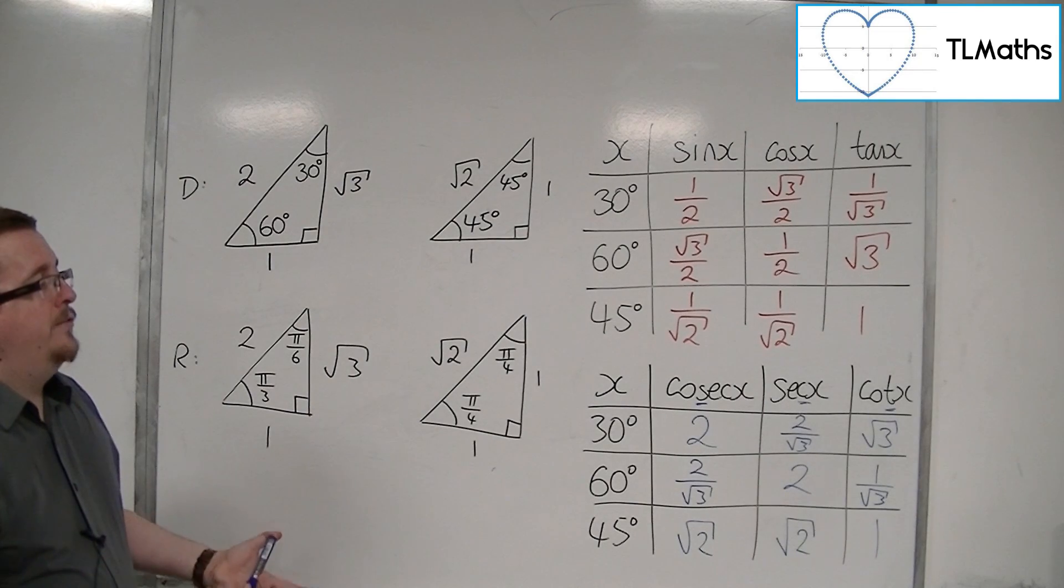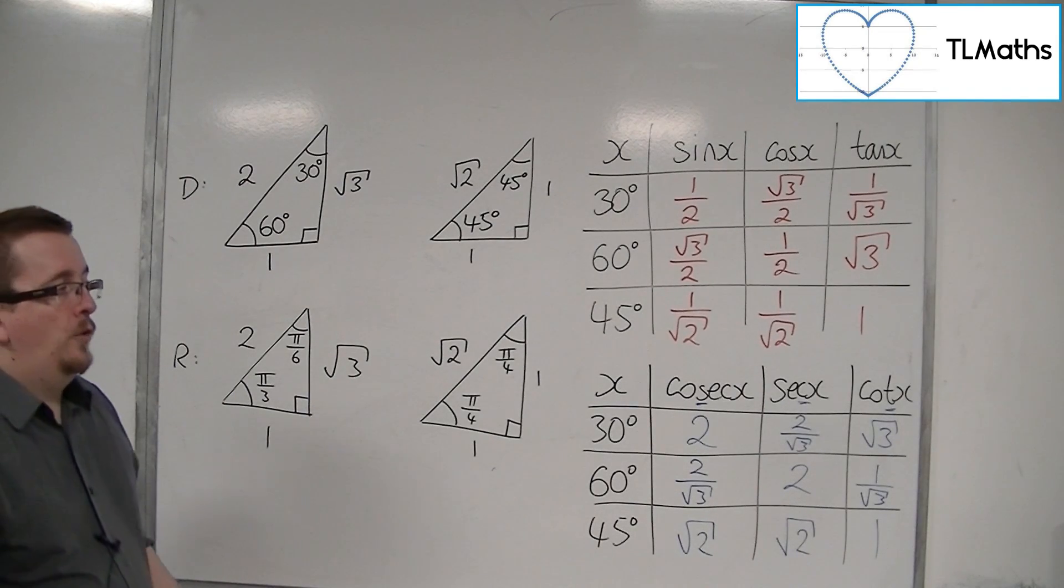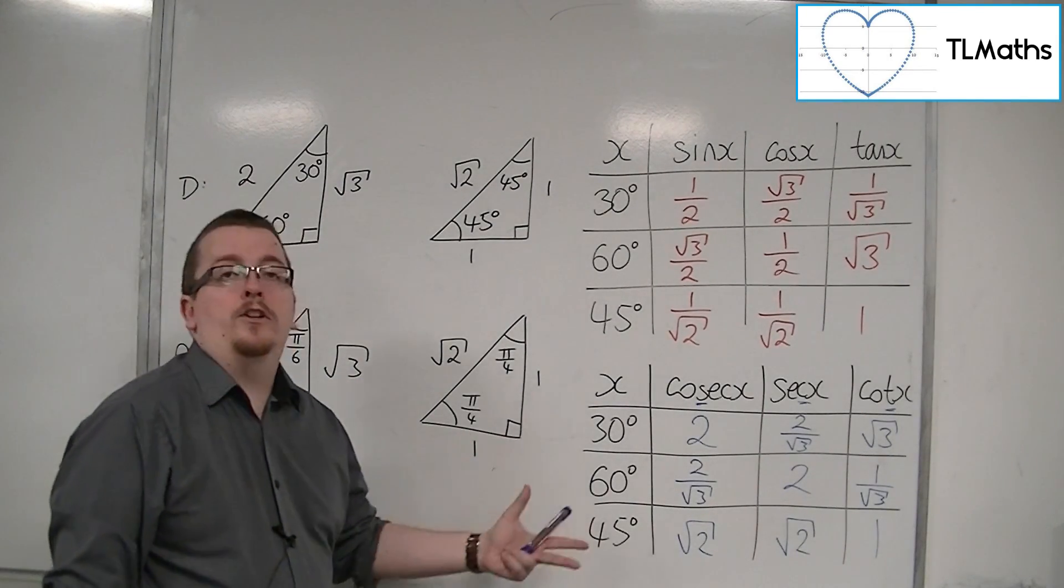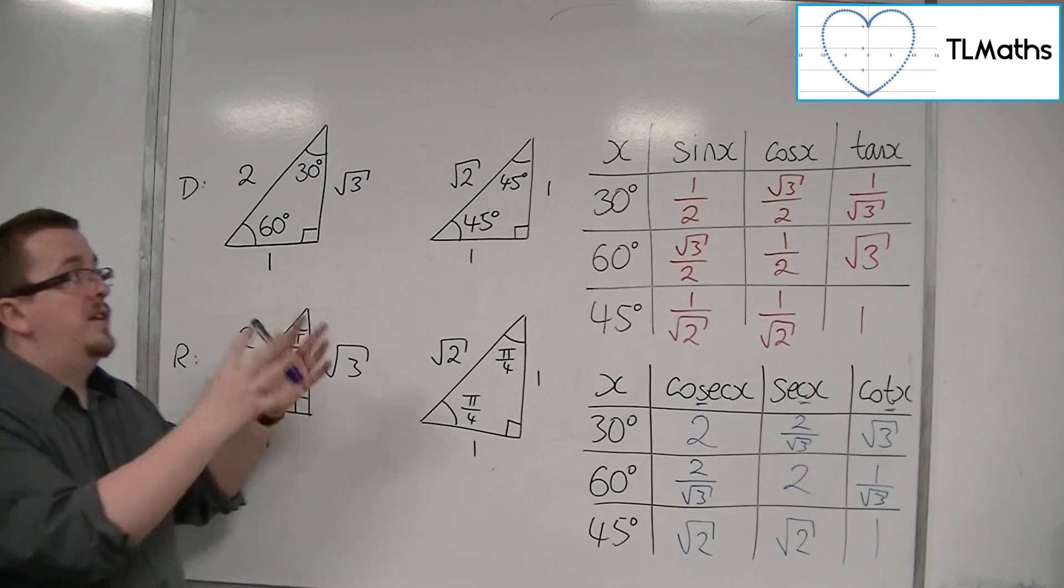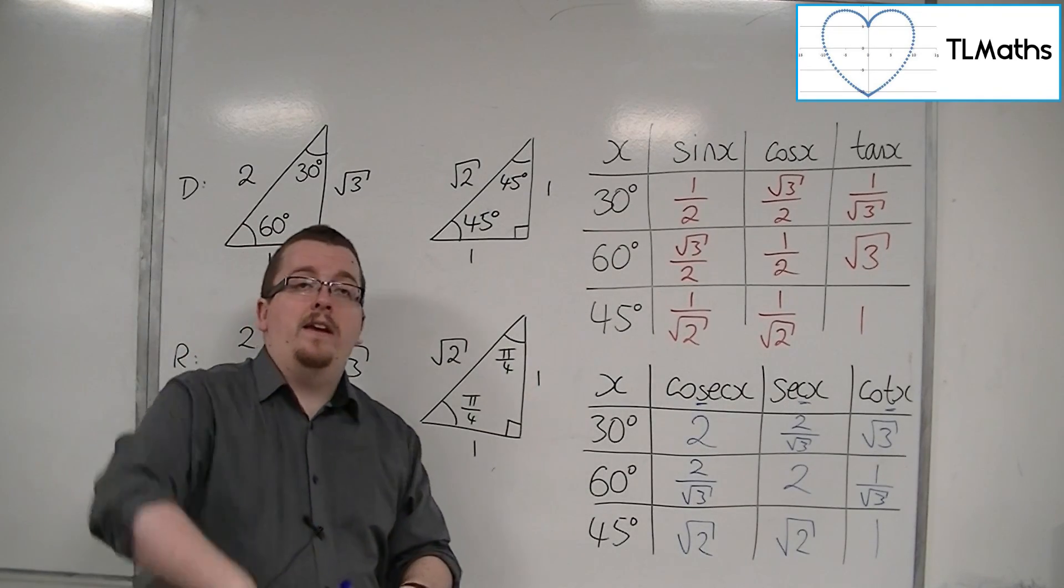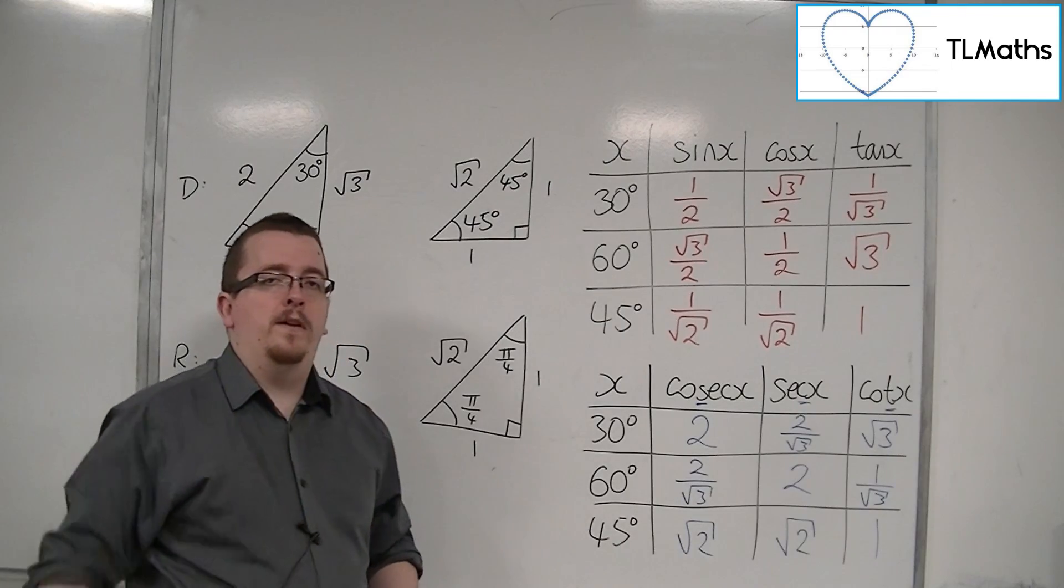So that's how we can find the exact values for cosec, sec, and cot. We just use the exact values for sine, cos, and tan, and use the reciprocal 1 over each of those values.